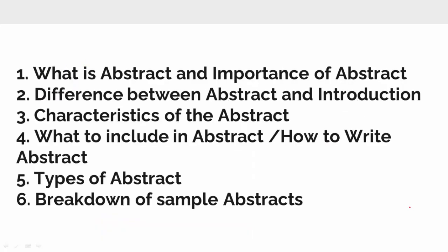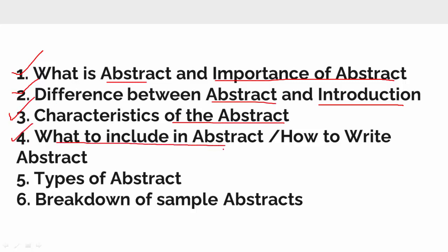In this video we are going to talk about six key things. First, what is an abstract and its importance. Then the difference between abstract and introduction. Then the characteristics of the abstract. Then what to include in the abstract line by line. Then the types of abstract. And finally, we will see some sample abstracts and break them down so we can understand what the author has talked about in each line.